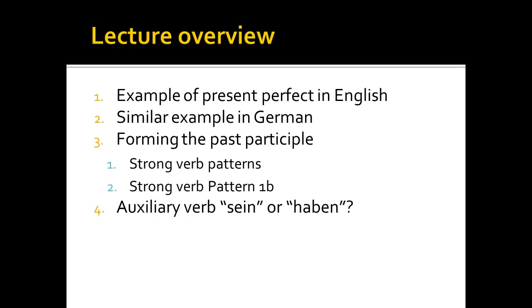After looking at those patterns generally, we'll look at one specifically — what they call strong verb pattern 1b. Finally, we'll conclude our lecture with a discussion of when to use the auxiliary verb sein or haben when forming the present perfect tense.